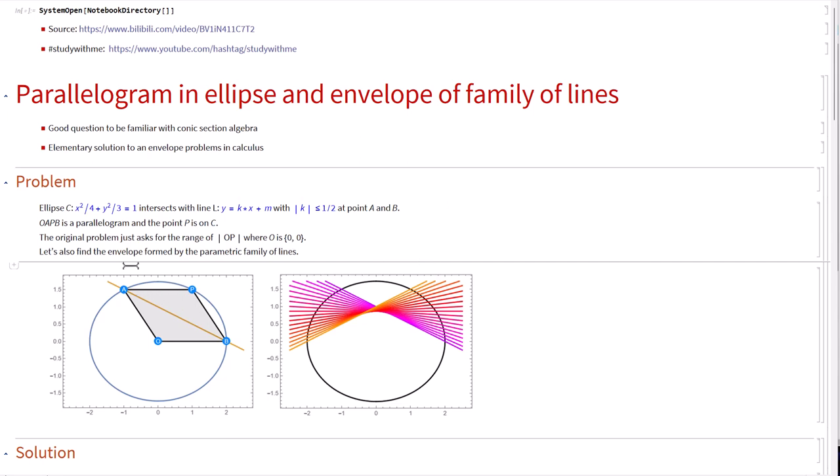So given an ellipse, its parametric or its contour is described by this blue equation. It's x squared over 4 plus y squared over 3 equal to 1 and intersects with the line that's l given by y equal to k times x plus m. And here is a restriction that the slope, the absolute value of slope is between minus one half and positive one half. And this line intersects with the ellipse at two points. One is a and the other is b. And o is the origin.